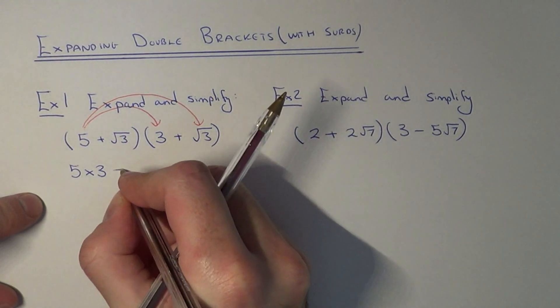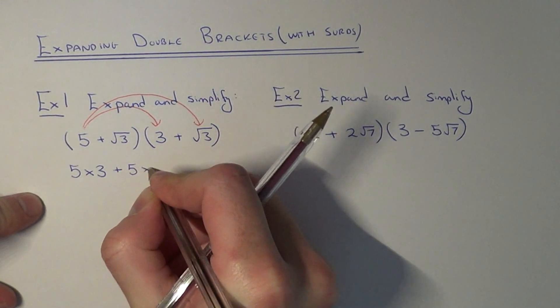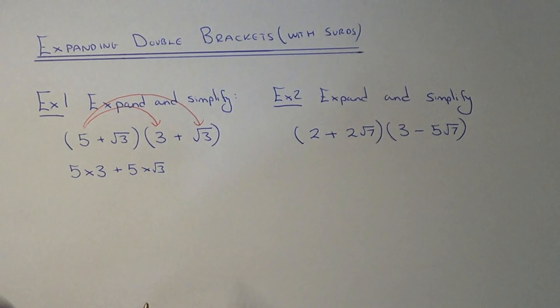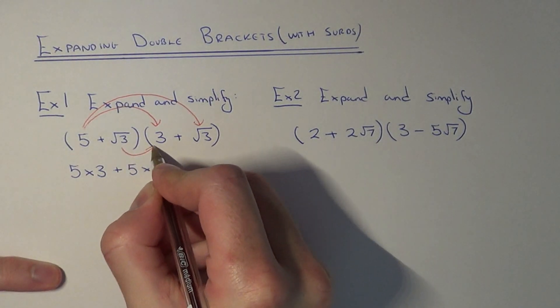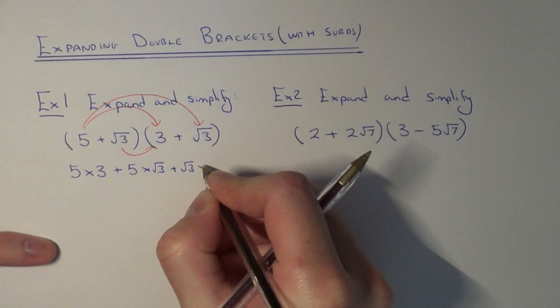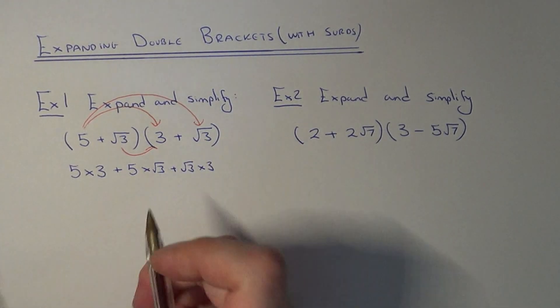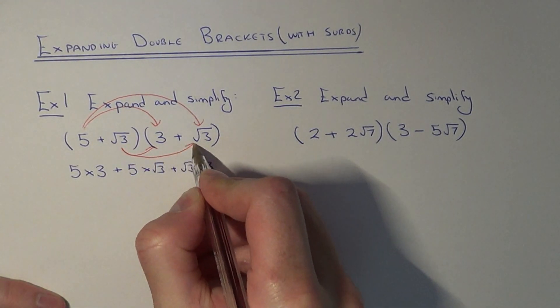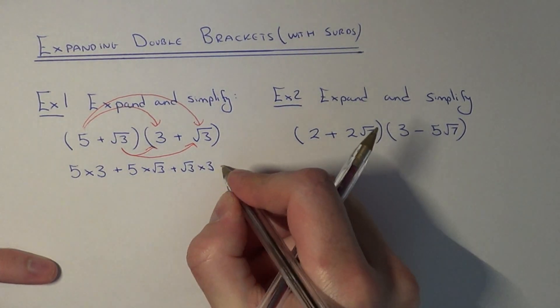Next we've got 5 times root 3. Our inner terms, we've got root 3 times 3. And our final terms, we've got root 3 times root 3.